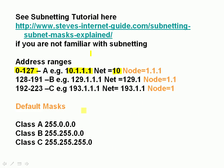The default subnet mask for a class A is 255.255.0.0 — all that means is we're using 8 bits for the network. A class B is 255.255.0.0, this time we're using 16 bits for the network. And a class C is 255.255.255.0, using 24 bits for the network.